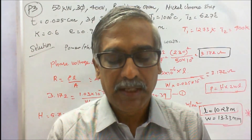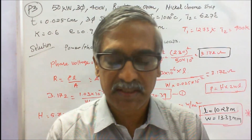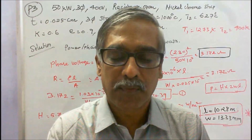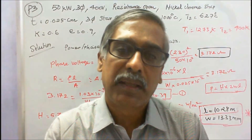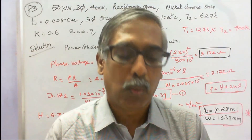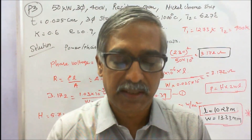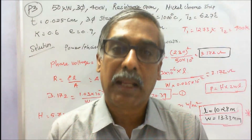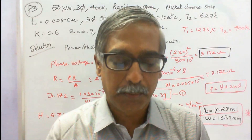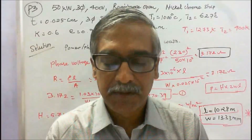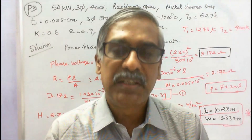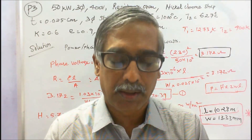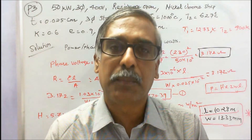Problem 3: Calculate the dimensions for a 50kW three-phase 400V resistance oven employing a nickel-chrome strip of 0.025 cm thickness for the three-phase star-connected heating element. If the wire temperature is to be 1000°C and that of the charge is to be 627°C, calculate a suitable width of the strip. Assume radiating efficiency is 0.6, emissivity is 0.9, and specific resistance of nickel-chrome alloy is 1.03×10⁻⁶ ohm-meter.